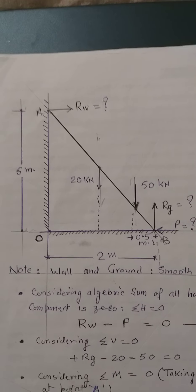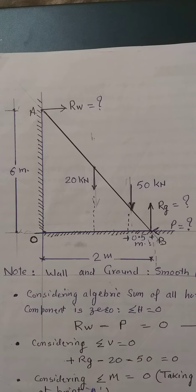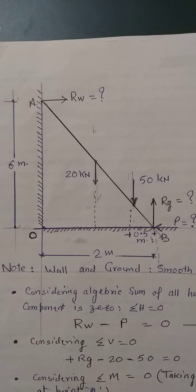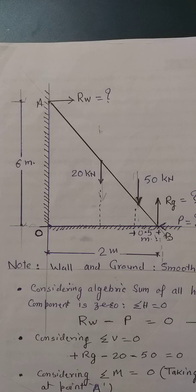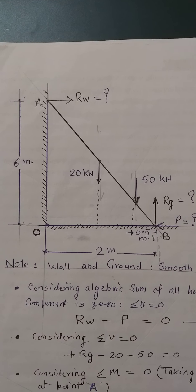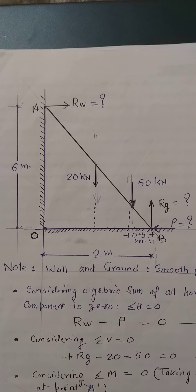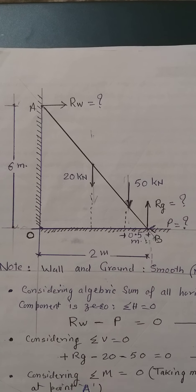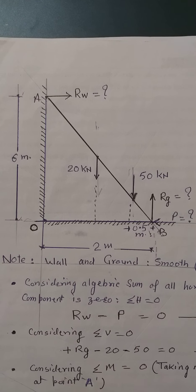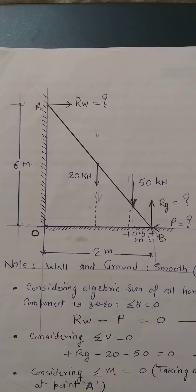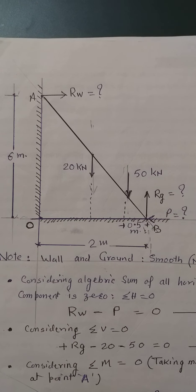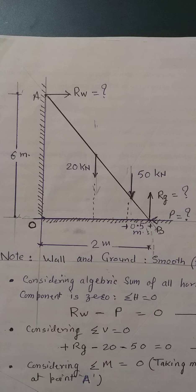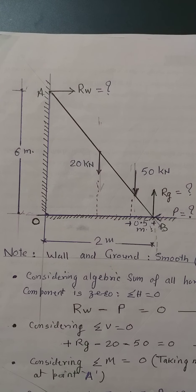For this, we have considered a ladder. One end is resting on the ground, and the other end is resting on a wall. The height of the wall where one end is resting is 6 meters, and the other end of the ladder resting on the ground is at a horizontal distance of 2 meters. There is a self-weight of the ladder acting exactly at the center, which is 20 kilo Newton, and a person weighing 50 kilo Newton is climbing over the ladder at a horizontal distance of 0.5 meter, or an inclined length of 1.58 meter.